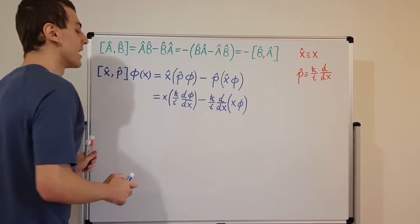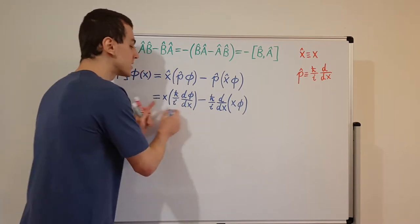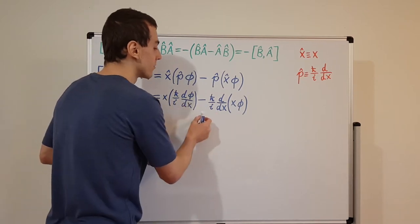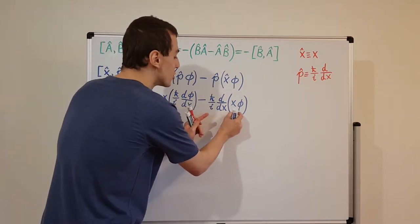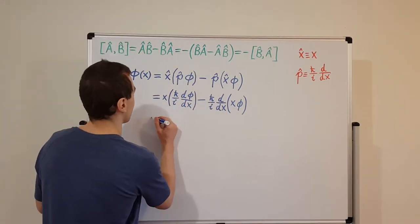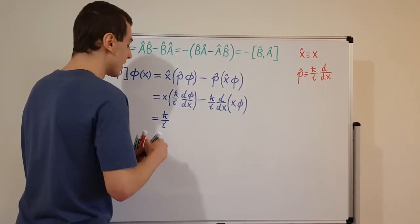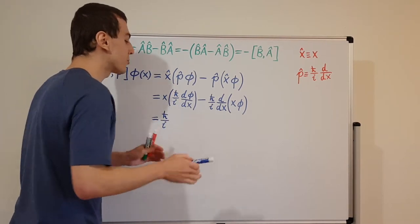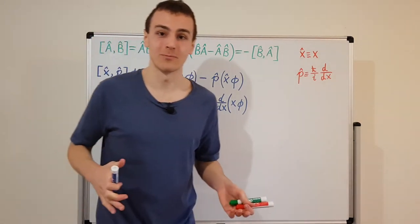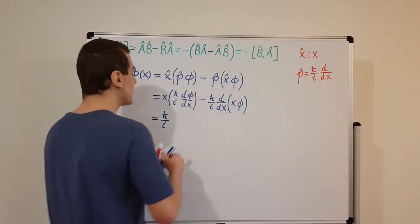Both terms share a common factor of h-bar/i, which is just a constant. Constants commute with multiplication by x and with differentiation, so we can factor it out. This is a nice illustration: constants are commutative, but operators in general are not — and that's actually where many of the elegant ideas in quantum mechanics come from.